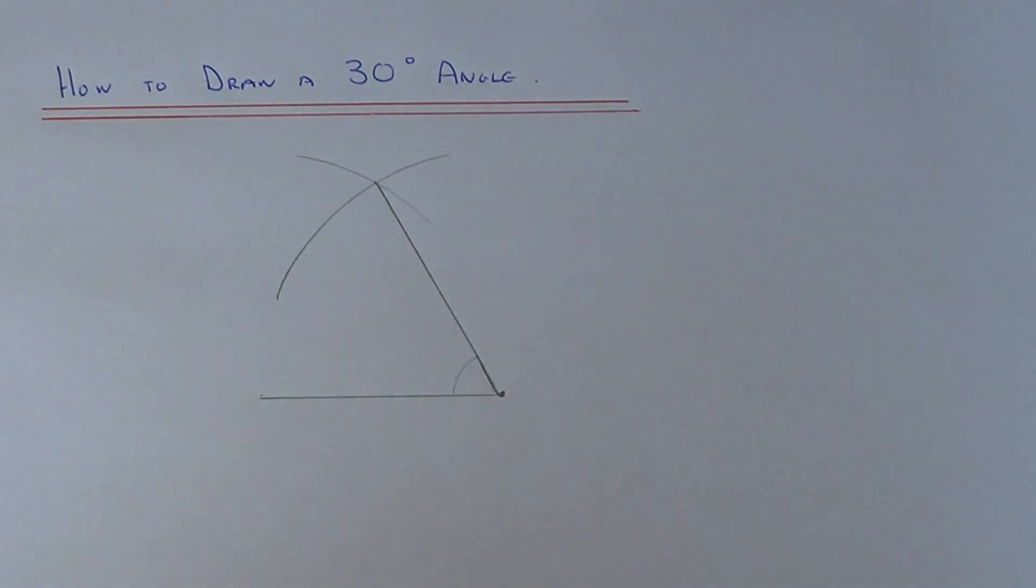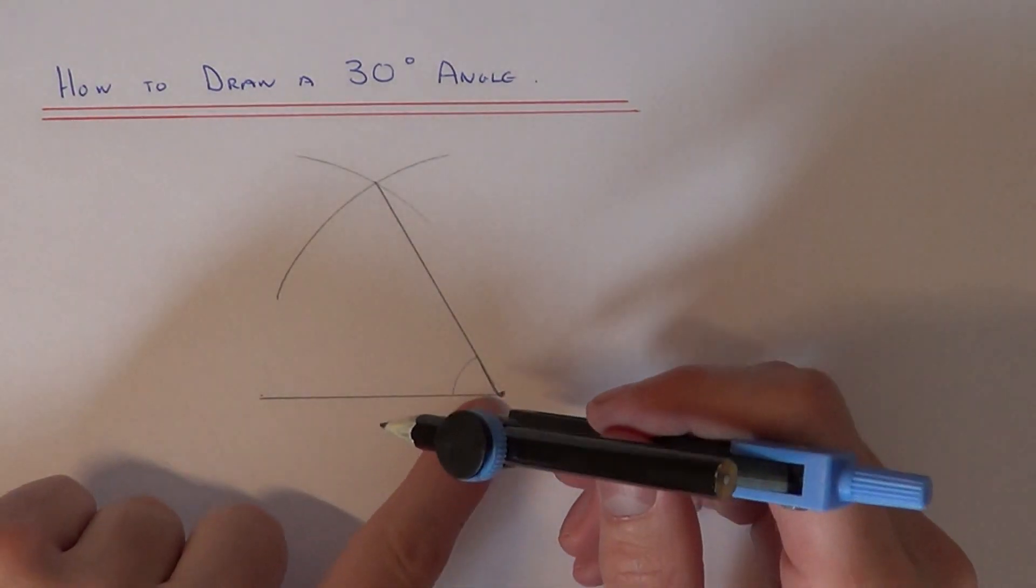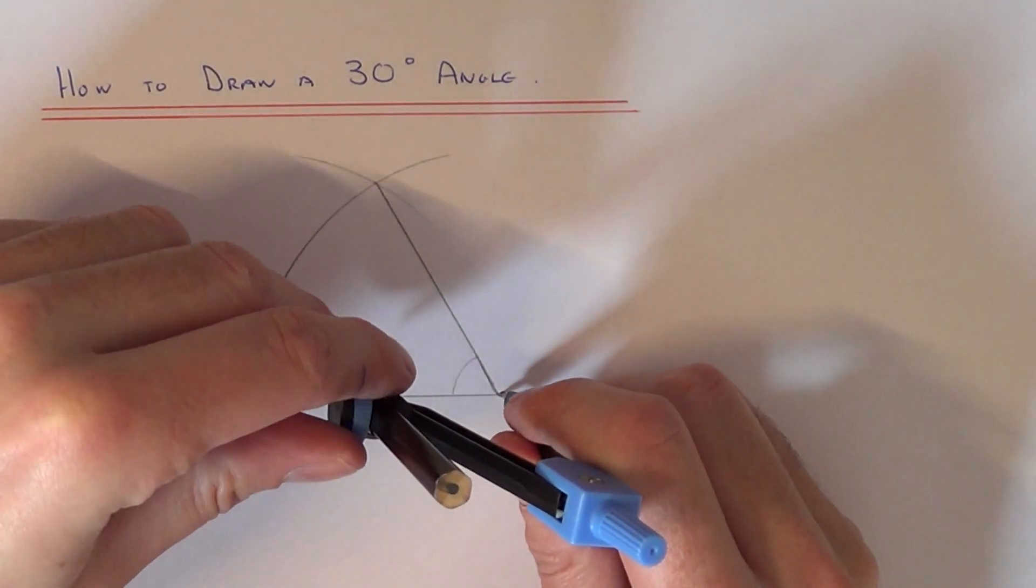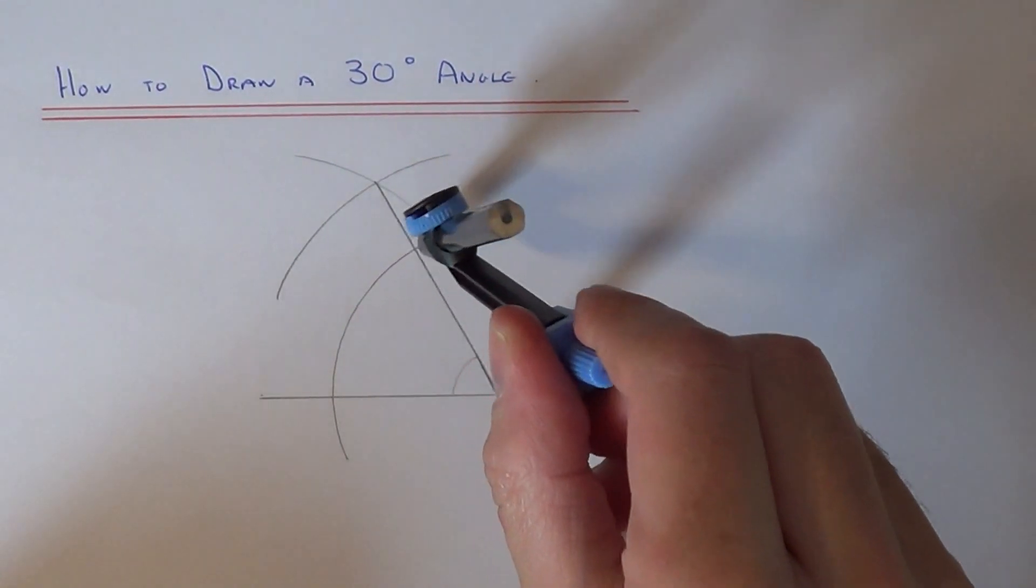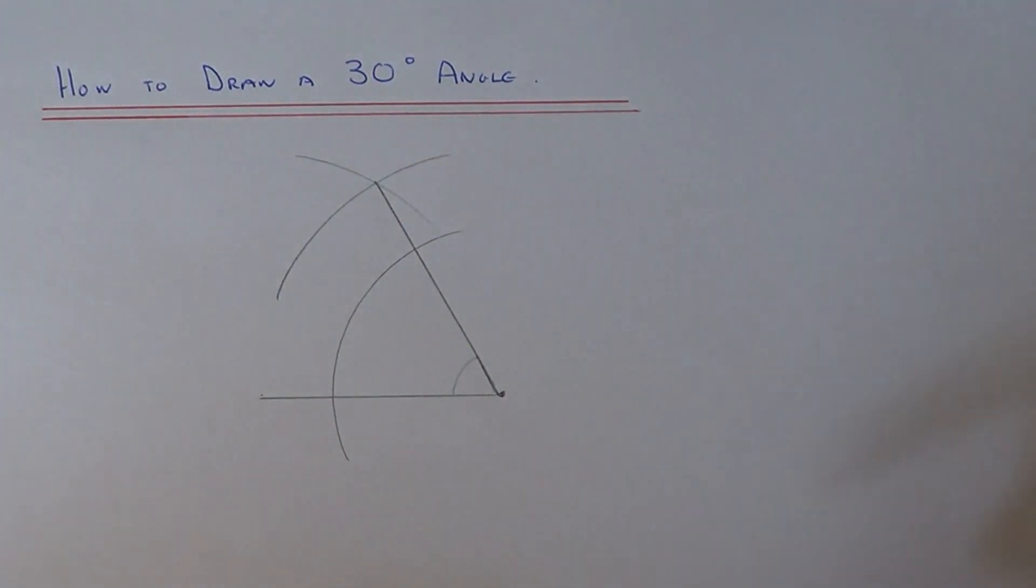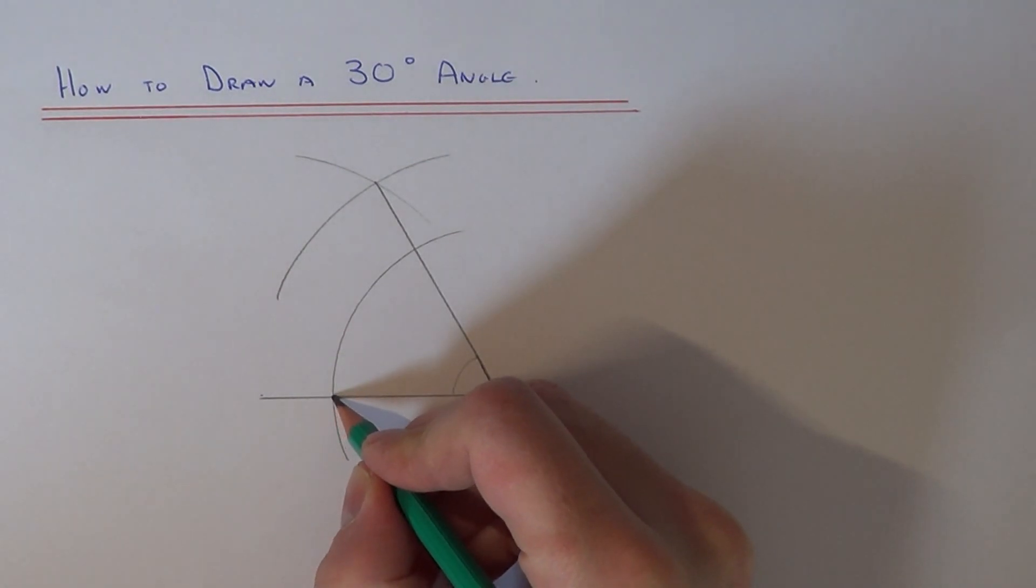Now if you bisect the 60 degree angle, this will give us the 30 degree angle. So we just need to do the angle bisector. Get your compass again and make an arc which goes across these two lines here, and we're going to move our compass point now